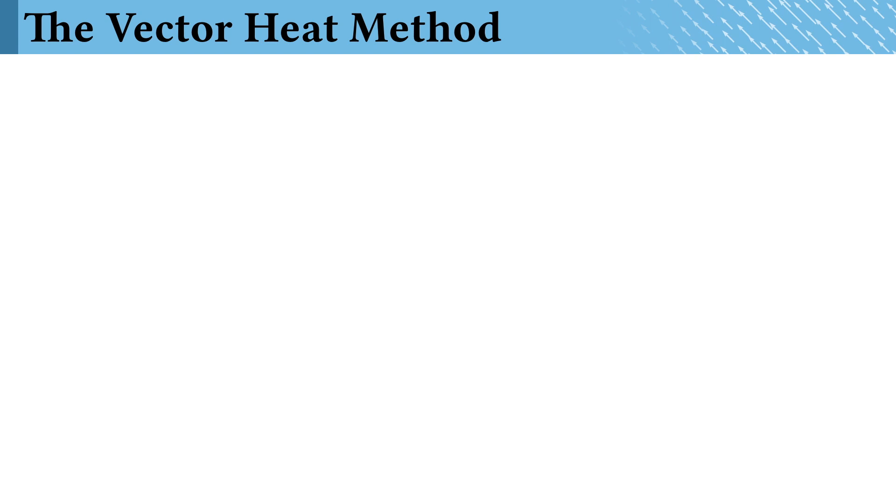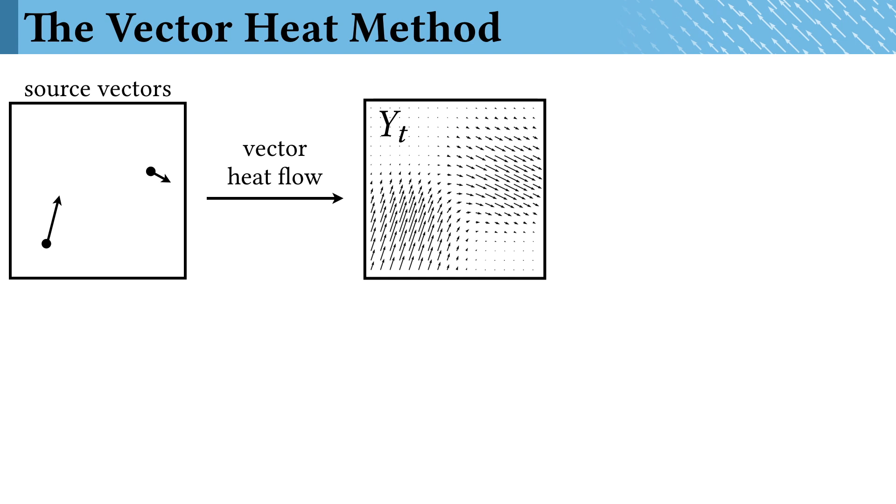Given isolated vector sources, we first diffuse them according to vector heat flow, resulting in this smeared-out field. Then we take their magnitudes and extend those magnitudes according to the same scalar scheme I just described.